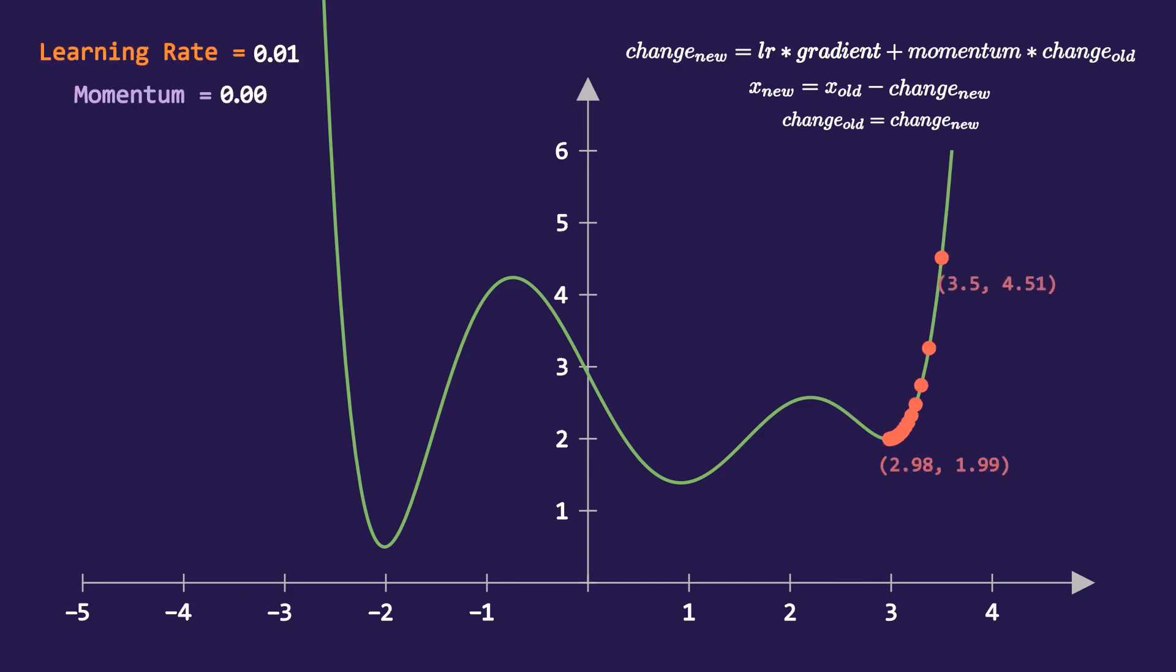Now if we introduce the concept of momentum in the equation of gradient descent it can do better. Usually the value of momentum is kept at 0.9. Just by adding this the gradient descent was able to pass this local minimum and now it is comparatively closer to the global minimum.